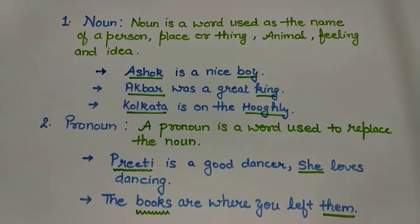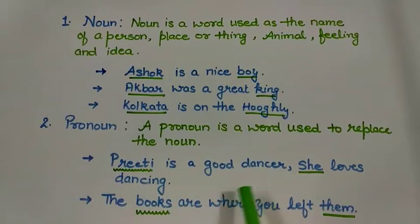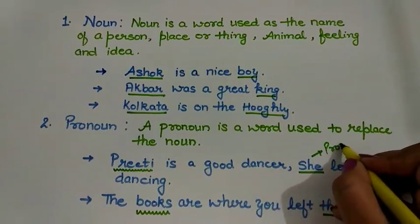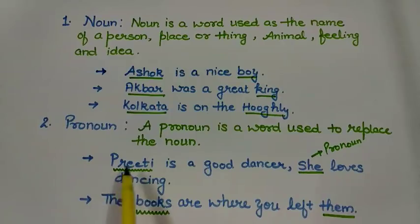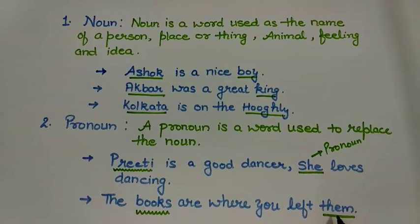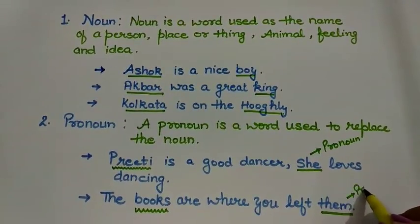The next part of speech is pronoun. A pronoun is a word used to replace a noun. Because we cannot use the name every time in a sentence or paragraph, we use pronouns. For example, 'Preeti is a good dancer. She loves dancing.' Here, 'she' is used as a pronoun in place of Preeti. Another example: 'The books are where you left them.' Here, 'them' is used as a pronoun in place of 'books,' which are things and therefore a noun.